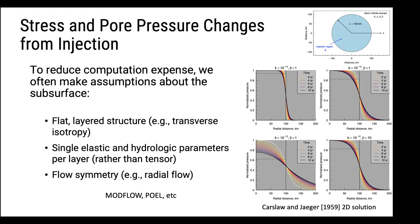In Oklahoma, for example, you would assume that the layers are flat and extensive in the horizontal direction — showing transverse isotropy, so there are different parameters per layer but not in the horizontal direction. Within each layer, you might assume some set of elastic or hydrologic parameters, rather than specifying a permeability tensor — you just choose a single value of permeability. And usually that comes along with assumptions about the flow regime, such as radial flow — the common assumption. These assumptions are built into codes like MODFLOW and POEL, which is the code I've used.